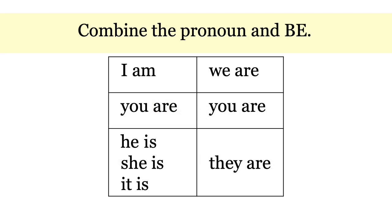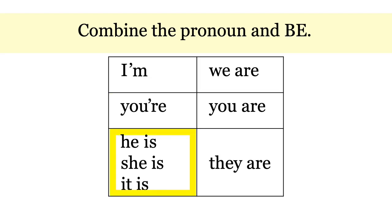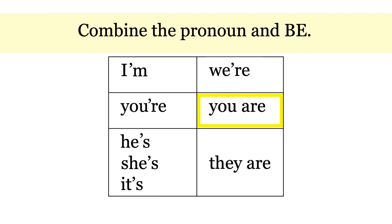Combine the pronoun and BE to make a contraction. Look at I am — we drop the A, move the M a little closer, and add an apostrophe: I'm. You are — we drop the A, push it a little closer, and add an apostrophe: you're. He is, she is, it is follow the same pattern — drop the I, move the S closer to make one word, and put in the apostrophe: he's, she's, it's. We are changes to we're. You are changes to you're. And they are changes to they're.